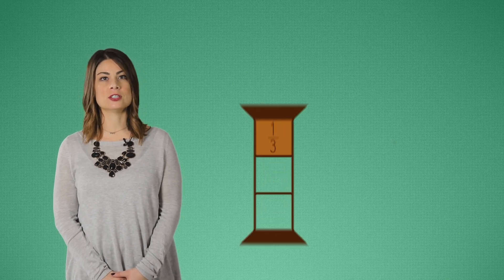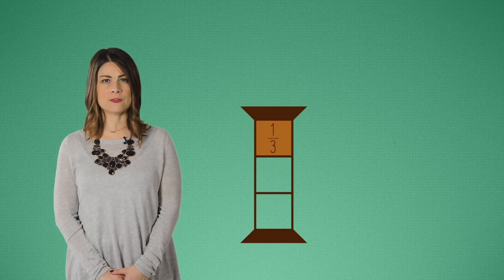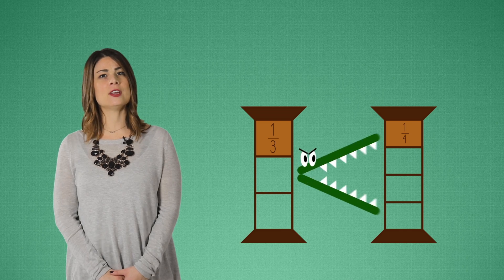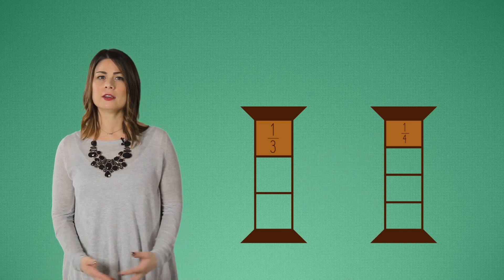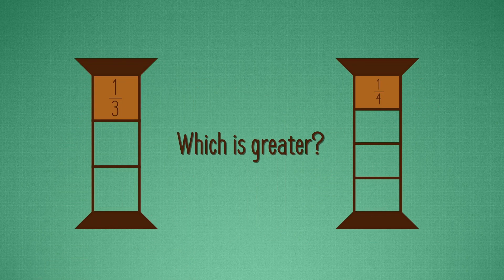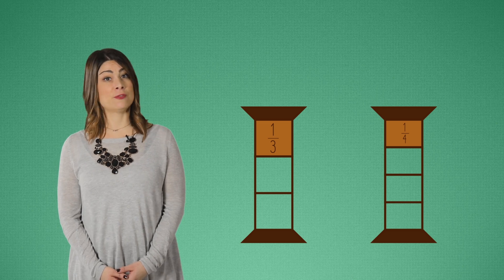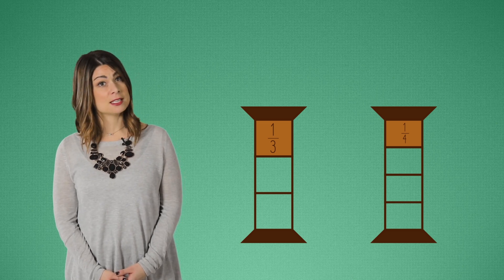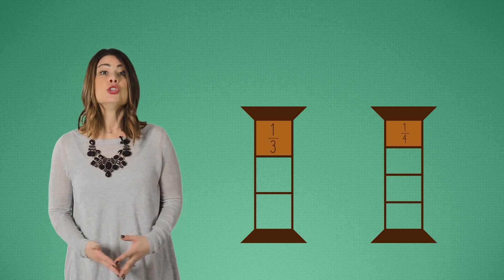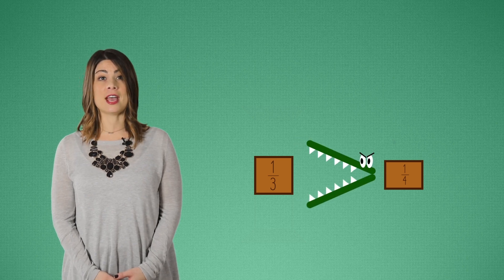Now how about we compare some fractions? If I had a candy bar that was split into thirds and another that was split into fourths, which would the alligator want to eat? Which is greater? We know that with fractions, fewer pieces means larger pieces. So one third is greater than one fourth. Now try a few on your own.